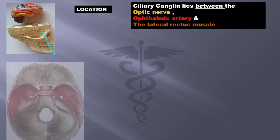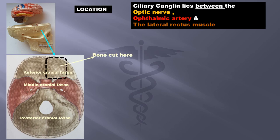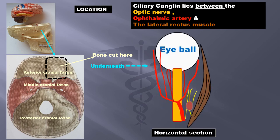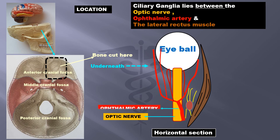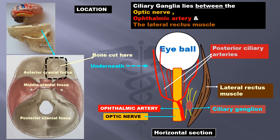The ciliary ganglia lies between the optic nerve, the ophthalmic artery, and the lateral rectus muscle. If the cranial vault is cut horizontally and the brain removed, we can see the base of the skull. On removal of the bone of the anterior cranial fossa, underneath you will be able to see this image: the optic nerve, the ophthalmic artery, the ciliary ganglia, and the lateral rectus muscle. The branches of the ophthalmic artery just behind the eyeball are called posterior ciliary arteries.